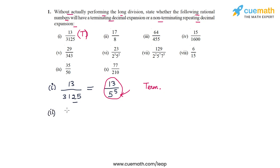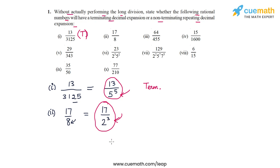The second number is 17/8. If I prime factorize the denominator 8, I can write it as 17/2^3. The denominator 2^3 has no prime factors other than twos and fives — in fact it has only twos. So the decimal expansion of 17/8 will also be terminating.